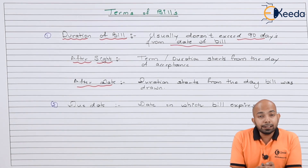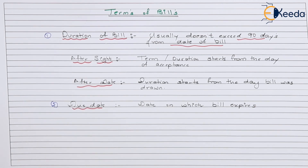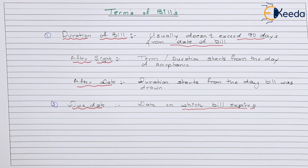The next term we'll be discussing is the due date. The due date is the date when the bill is supposed to expire or get cancelled. After that date, the bill won't be effective at all. The effectiveness or consumption of that specific bill can only be done until that date, which is also known as the expiry date.